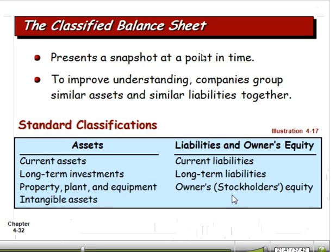A classified balance sheet presents a snapshot at a point in time — remember, the income statement and owner's equity statement cover a period of time, while the balance sheet is a point in time. To improve understanding, companies group similar assets and similar liabilities together, which helps us do comparisons between companies. Standard classifications for assets are: current assets, long-term investments, property/plant and equipment, and intangible assets. For liabilities and owner's equity, we show current liabilities, long-term liabilities, and owner's/stockholders' equity.